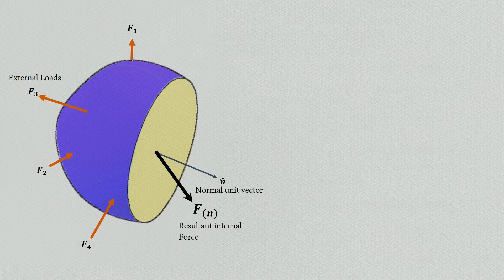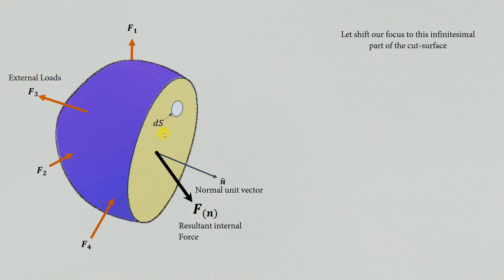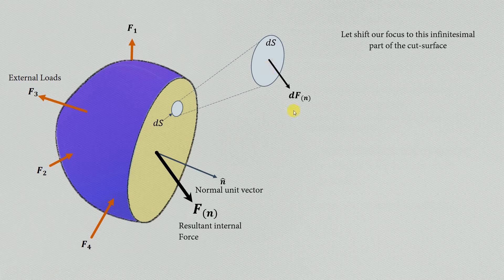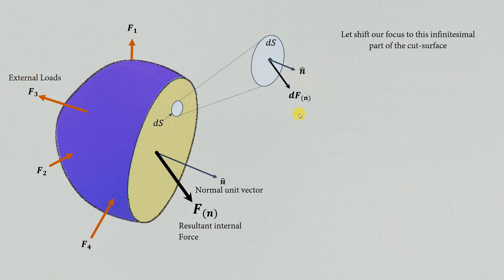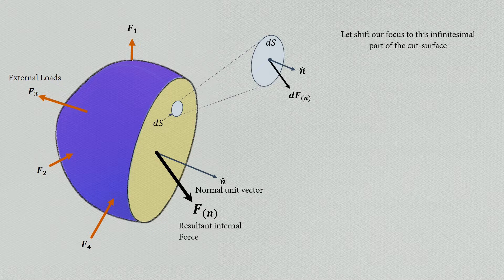Consider a small part of the surface. On this infinitesimally small part there will be an infinitesimally small resultant internal force — we'll call it dFn — where n is the normal unit vector to that plane. If you add up all such infinitesimally small resultant internal forces you get the net resultant internal force. The right part that we set aside is actually applying these internal forces on the left part.